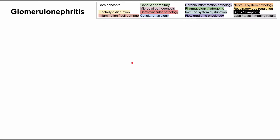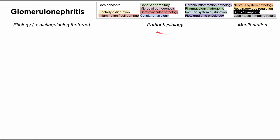This is a mechanism of disease map for glomerulonephritis. We'll be talking about the pathophysiology, then the manifestations — signs, symptoms, and labs — and at the end we'll cover the etiology with distinguishing features for the different types. Each box on the map is color-coded according to core concepts shown in the key at the top.